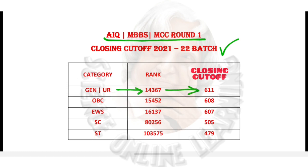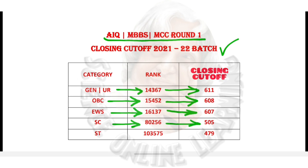Students, this is the nearby rank cutoff. Round 2 OBC candidates: 14,521. Closing cutoff: 608. EWS: 16,337. Cutoff: 607. Round 1 All India SC candidates: 85,256. Students: 15,513 to 17,937. This is for MBBS and BDS.